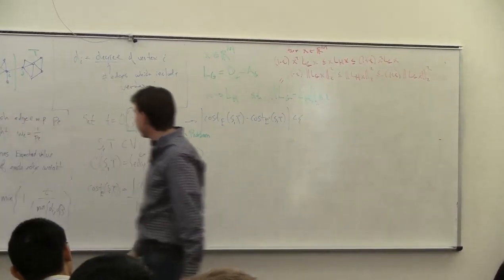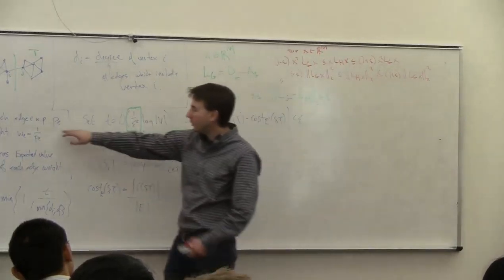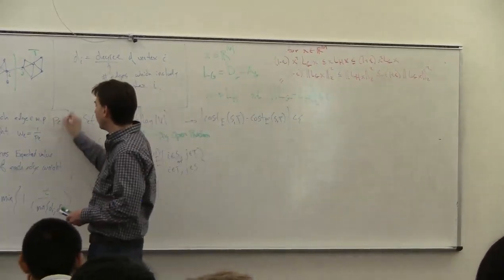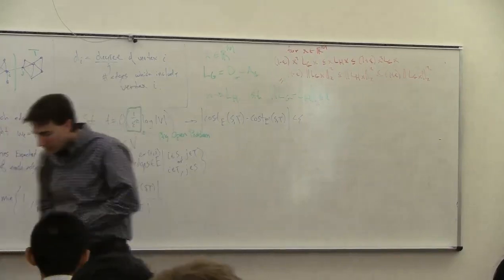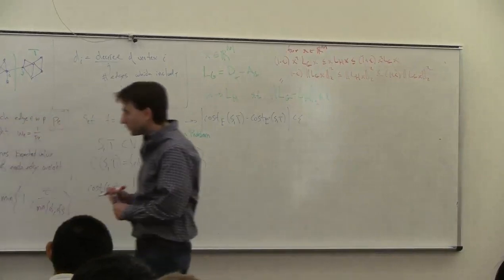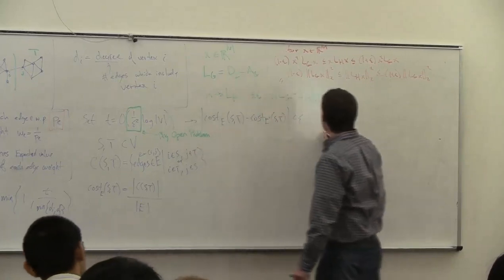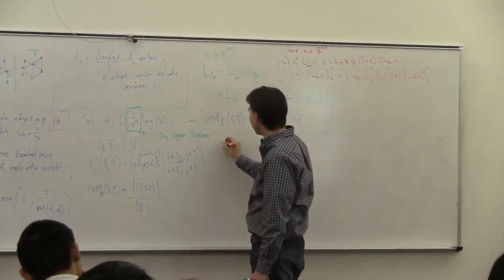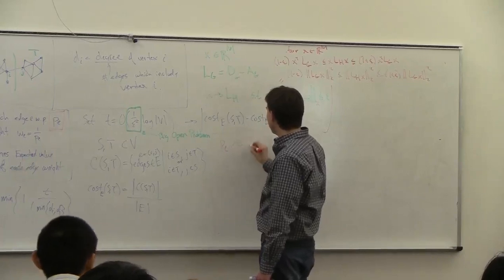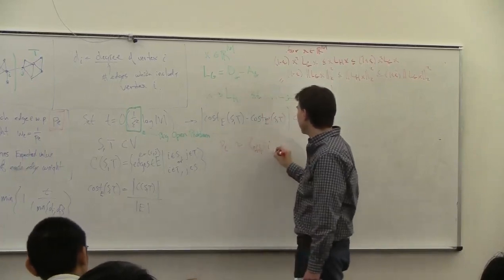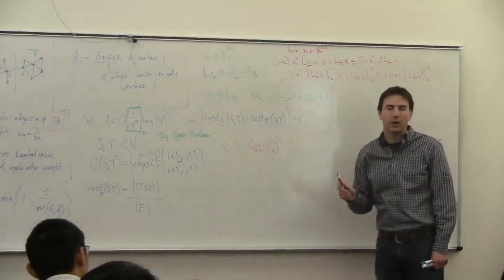It turns out that you can get this sort of guarantee by changing the probability that you select each edge. Instead of uniform sampling, you need to set P proportional to the effective resistance between i and j in the graph.